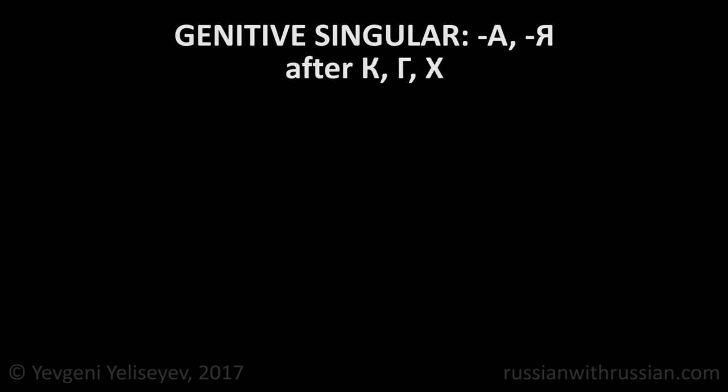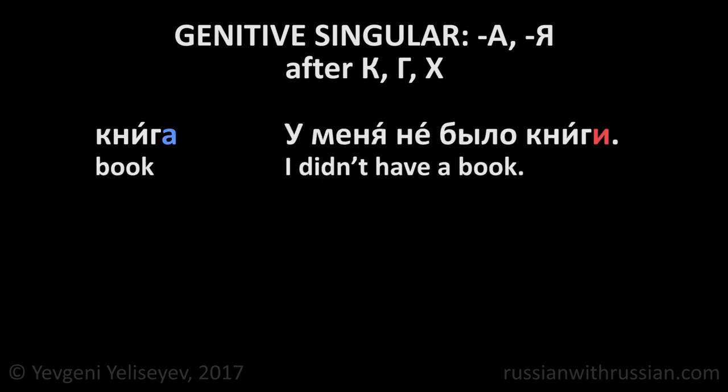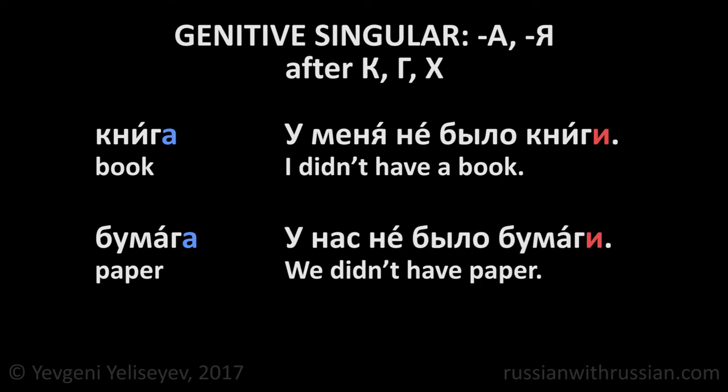After К, Г, and Х: Книга — book. У меня не было книги. I didn't have a book. Бумага — paper. У нас не было бумаги. We didn't have paper.